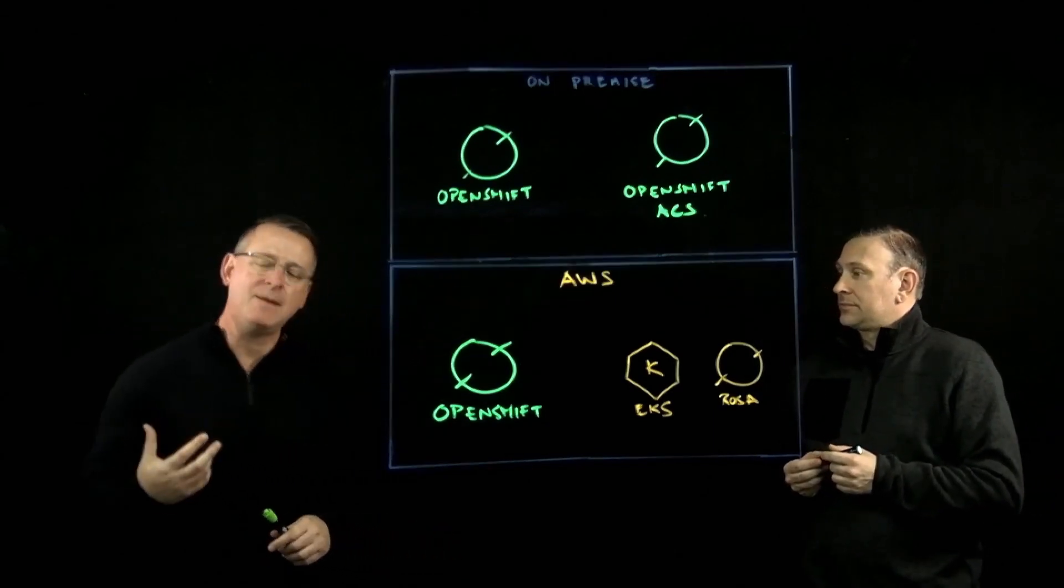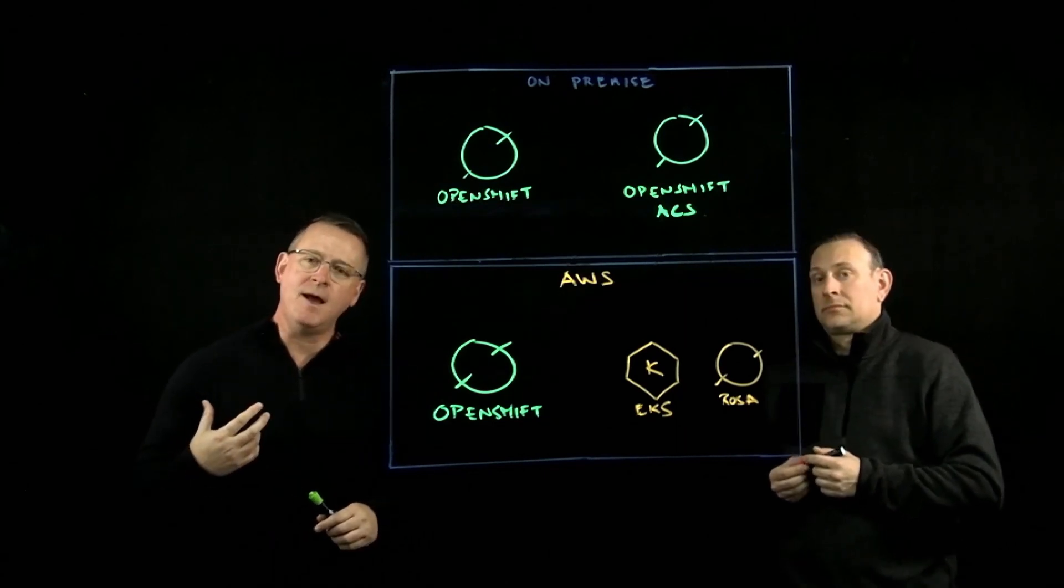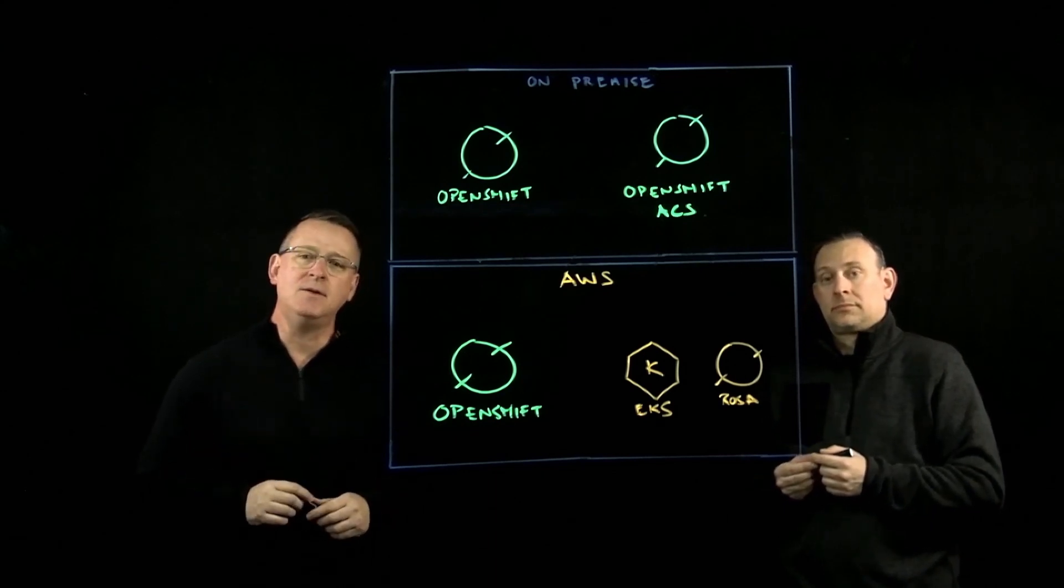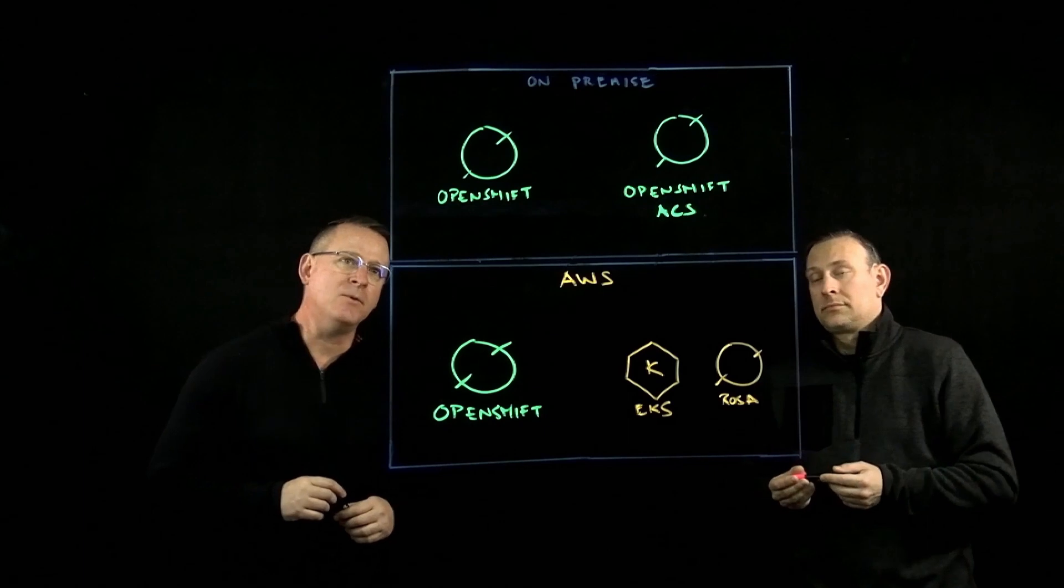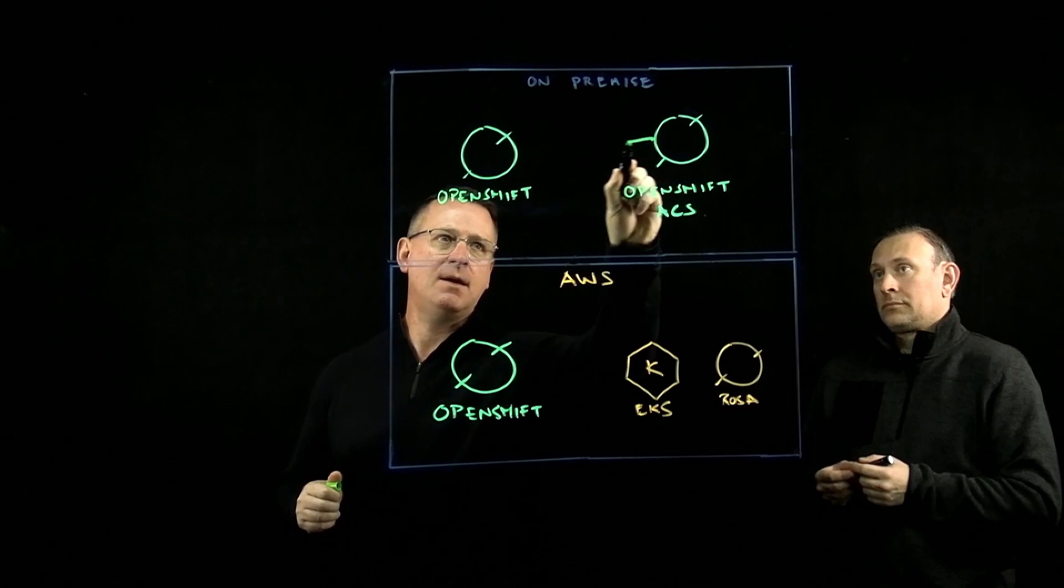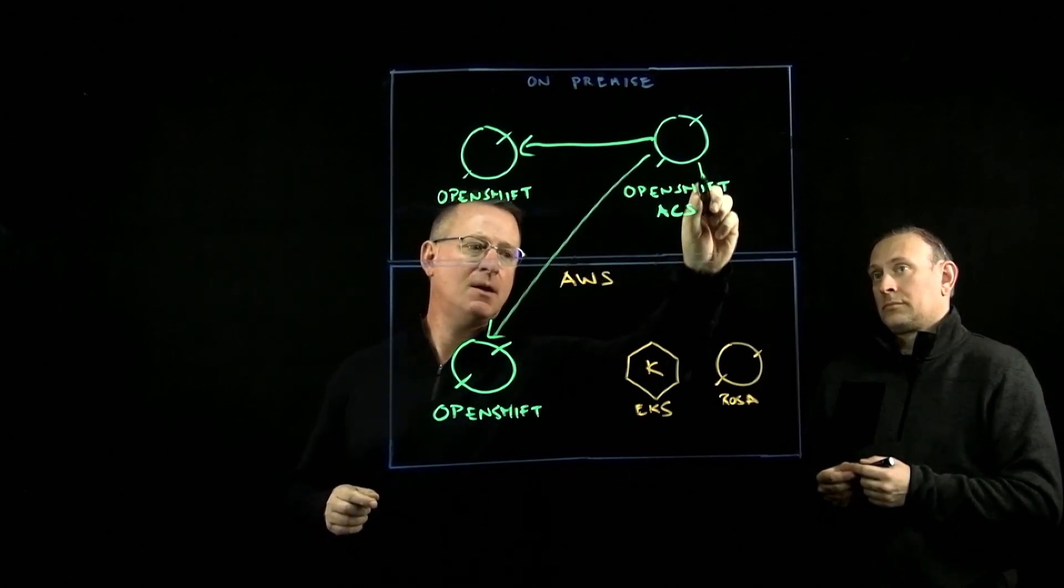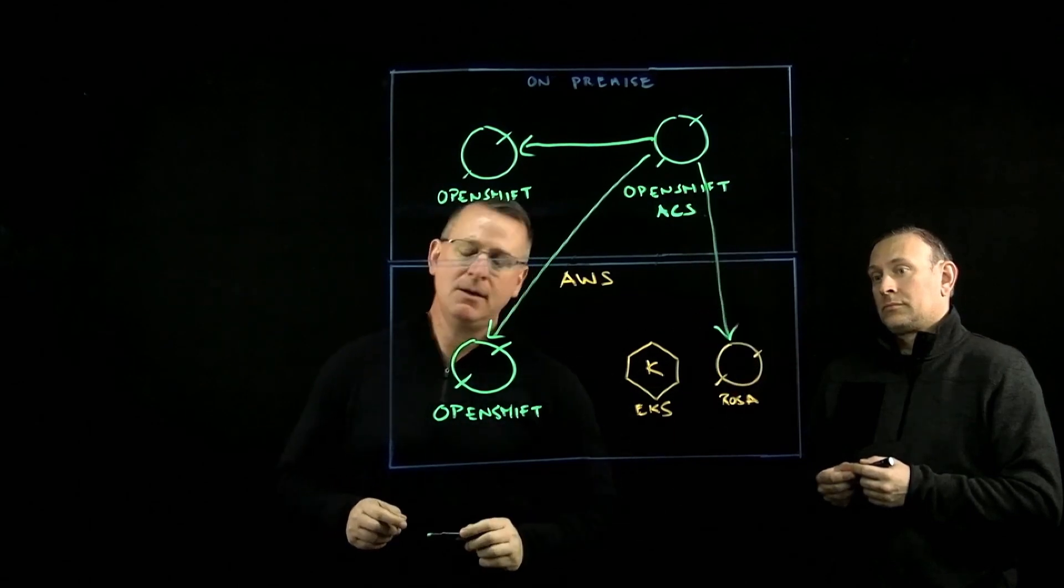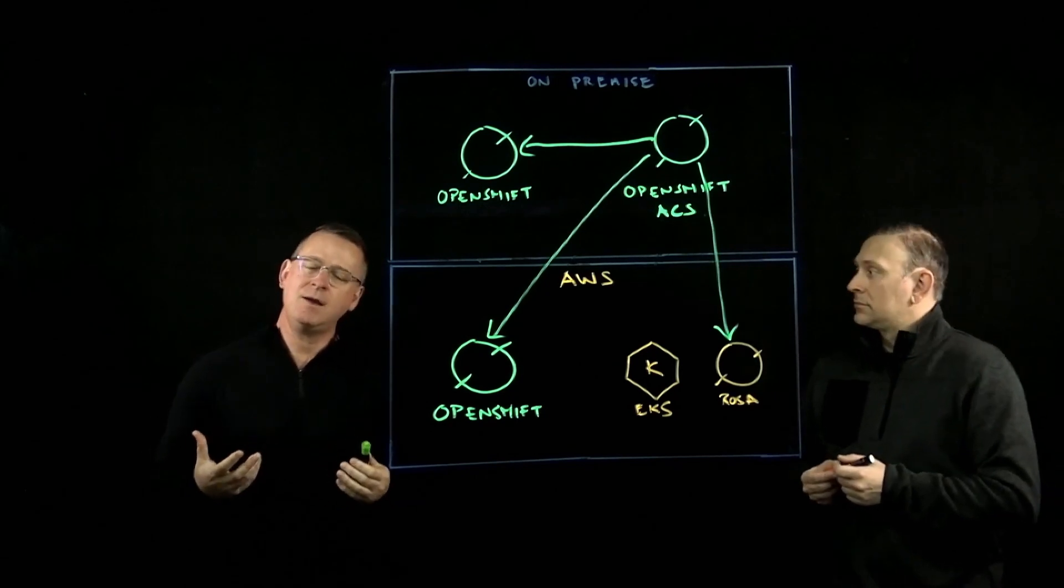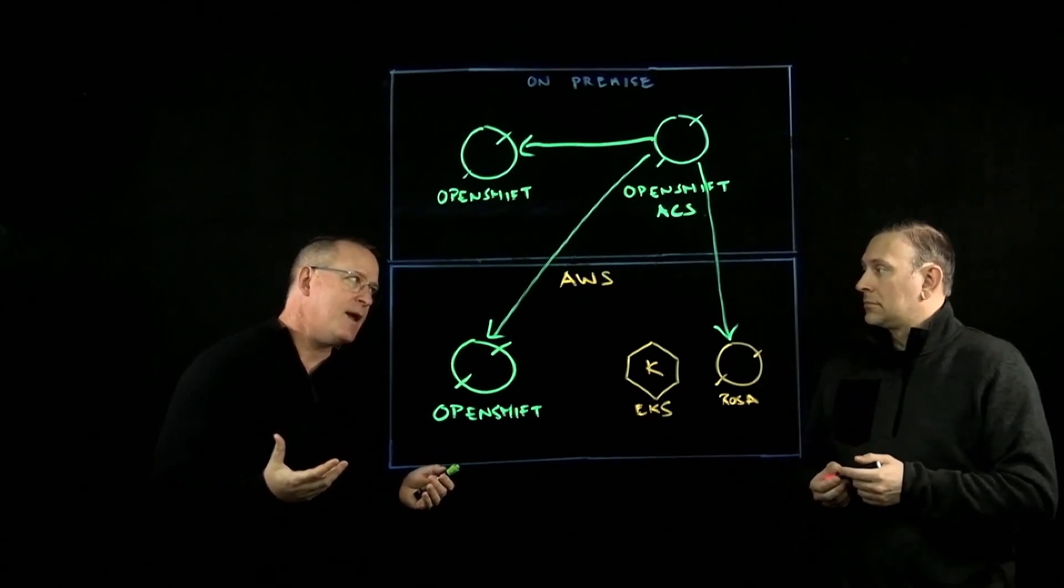Absolutely. So ACS, as its name implies, Advanced Cluster Security, allows you to apply principles or to apply security checks to any of the different types of containers that you may be deploying into your container platform. So you can see from this diagram, for example, that ACS can be used to manage OpenShift either on-premise or in the cloud on AWS or even manage a ROSA environment.